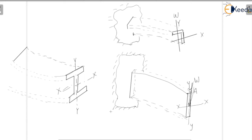There can be one more type where a channel section is subjected to a vertical load passing through the centroid G. In this case, the member is subjected to both bending and twisting under the applied vertical load W. The question arises: where should load W be applied so that the channel member bends without twisting? This is another scenario where unsymmetrical bending is relevant.